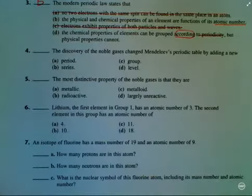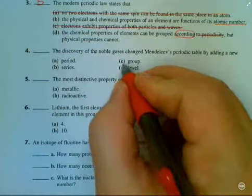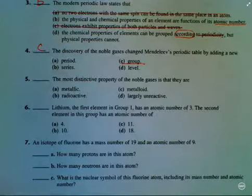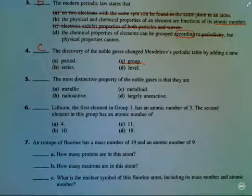What we need to remember is that vertical columns are called groups. Horizontal rows are called periods.